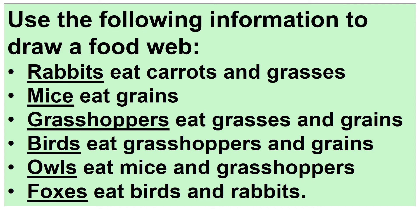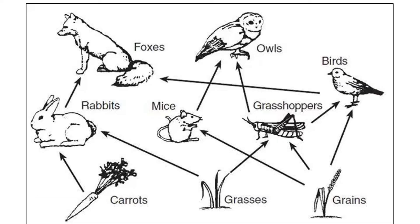This time, I'm just going to give you the information. Press pause and use that information to draw out a food web. This is what it should look like. You should have the producers — carrots, grasses, and grains — at the bottom. And hopefully you've got the arrowheads in there and haven't missed anything out.